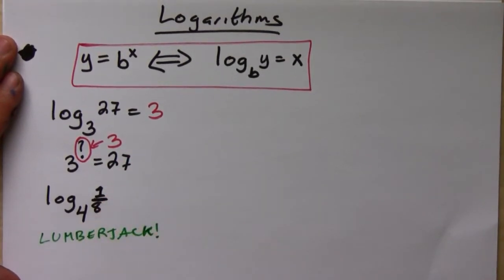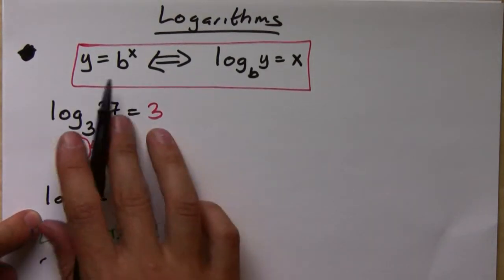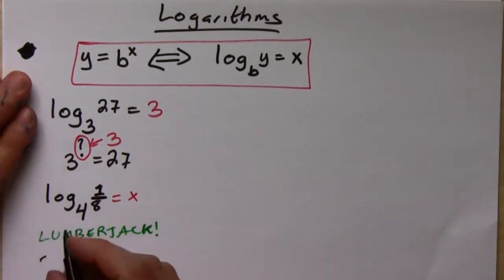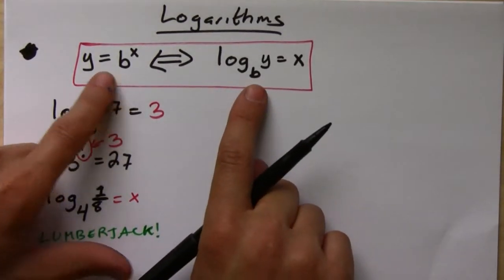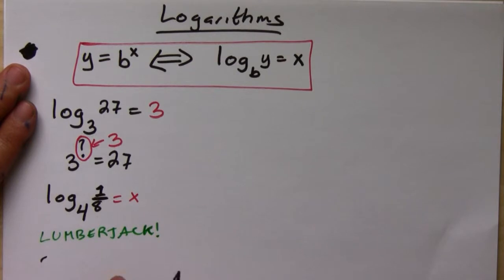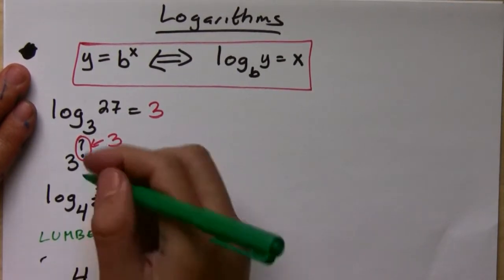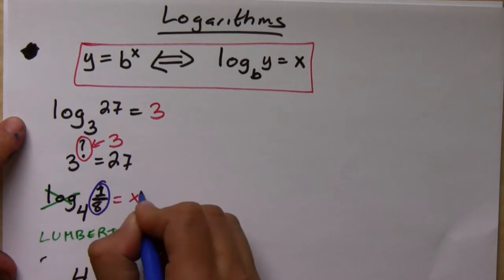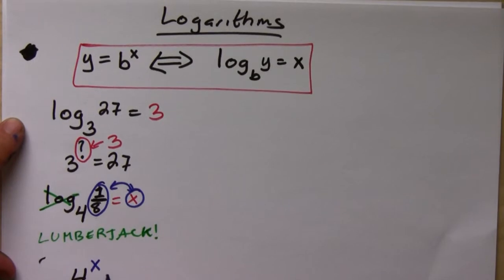Set the expression equal to x since you're looking for x. The way to remember the lumberjack: the base of the log is the same as the base of the exponential, so the base is 4. The lumberjack kills the log, and then you switch the two remaining pieces — x goes on top of the 4, and 1/8 goes to the other side.